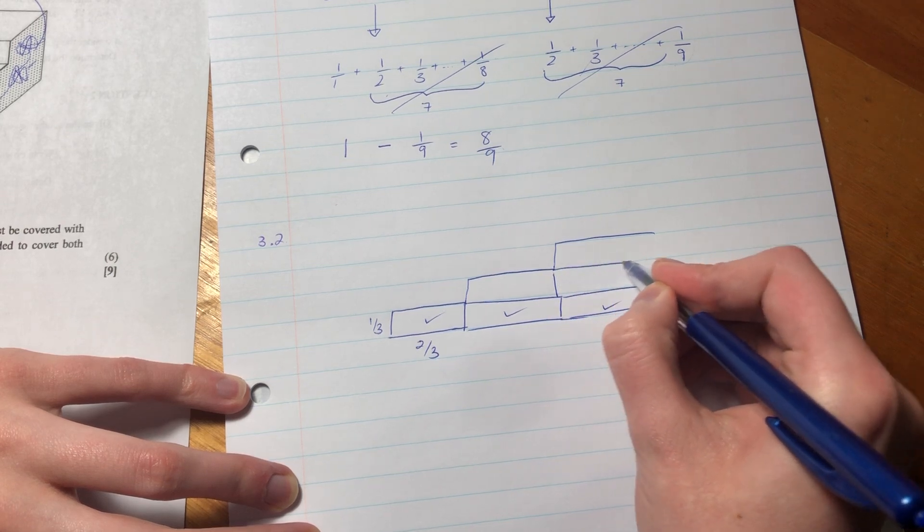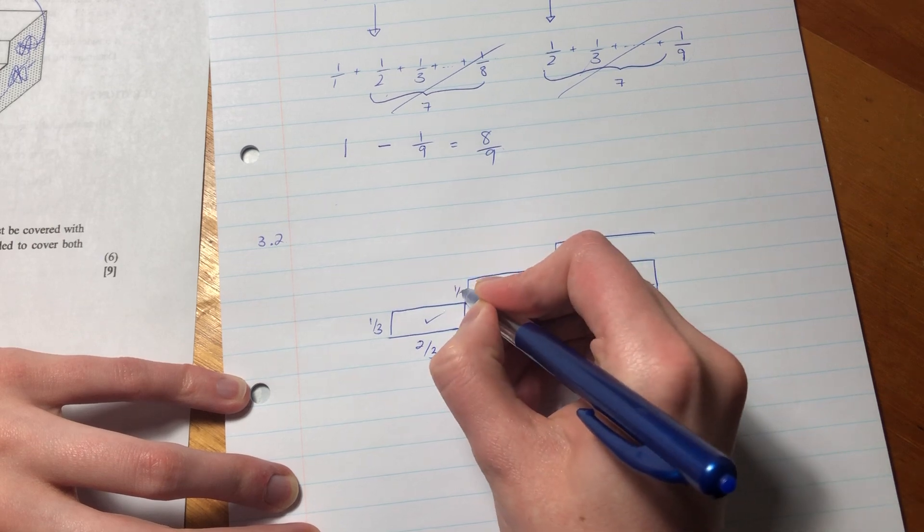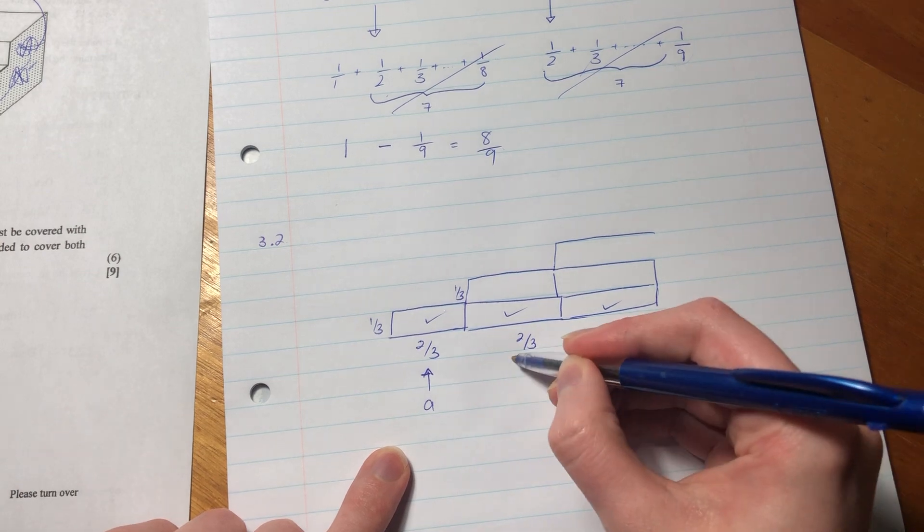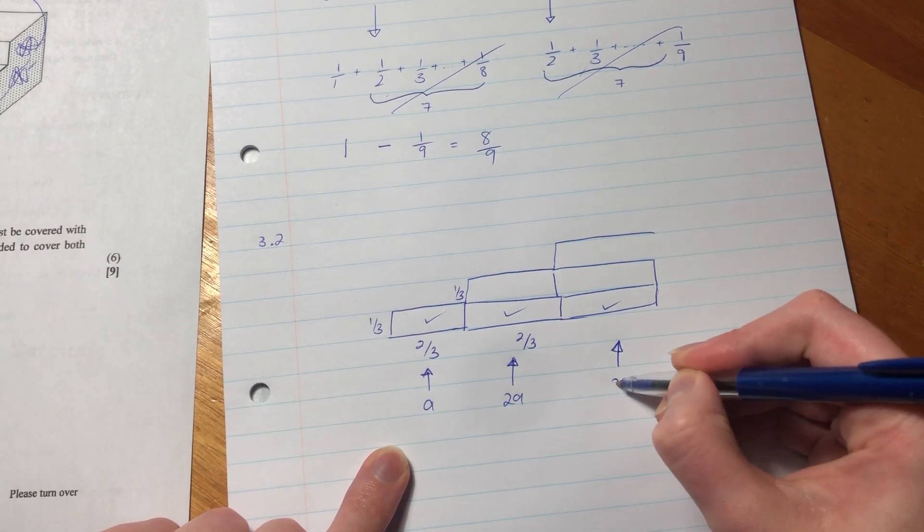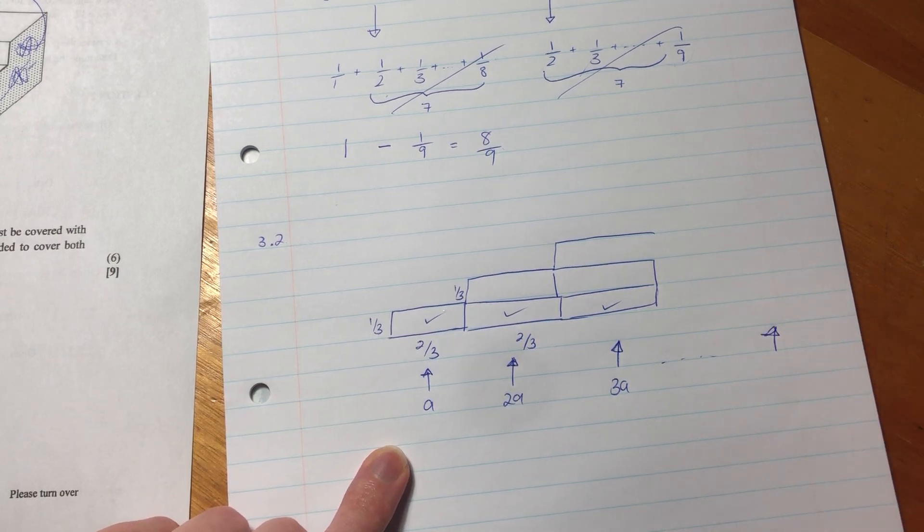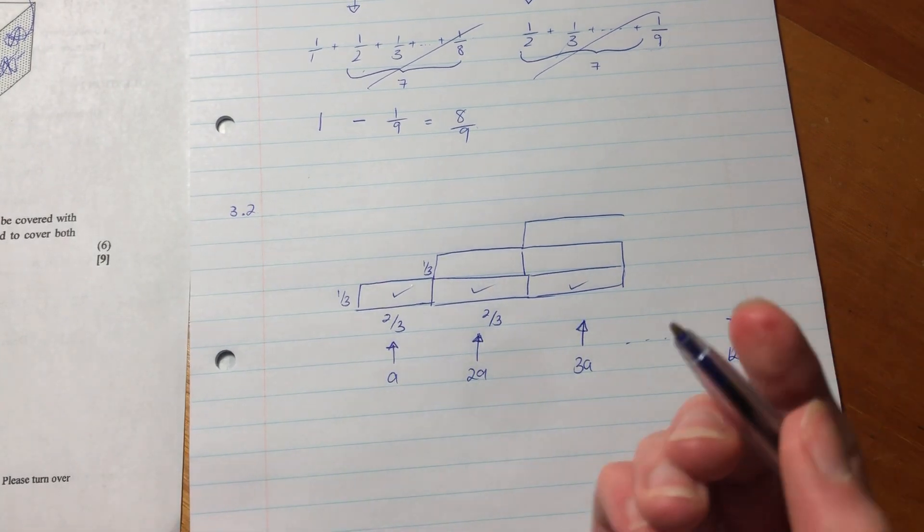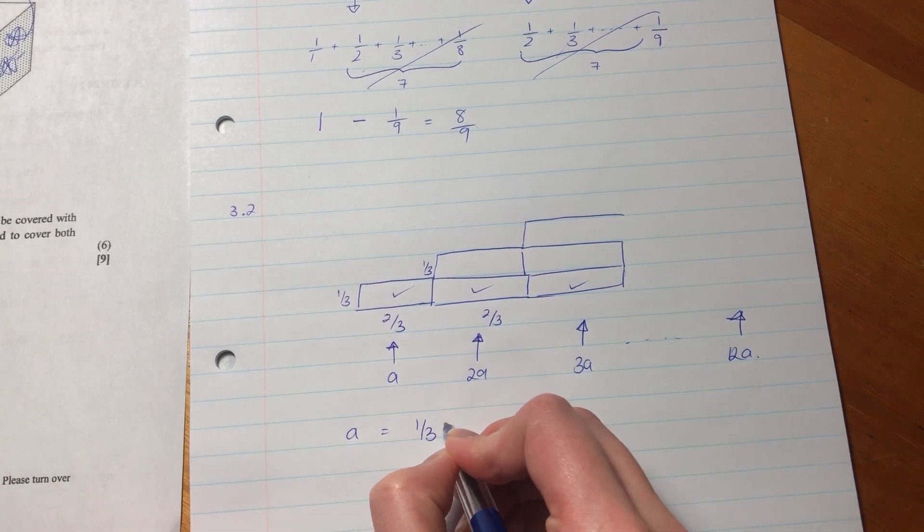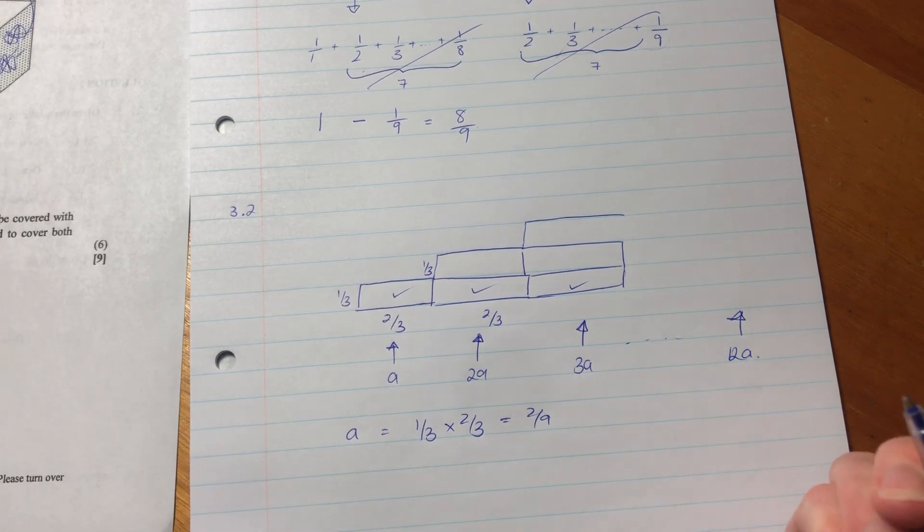Then there's 11 on the second step, but with the same dimensions: 2/3 by 1/3. If we call the area of one rectangle 'a', then the first step has area a, the second step has 2a, the third has 3a, and so on. Each rectangle equals 1/3 times 2/3—that's the definition of area.